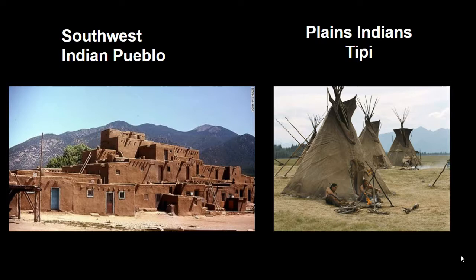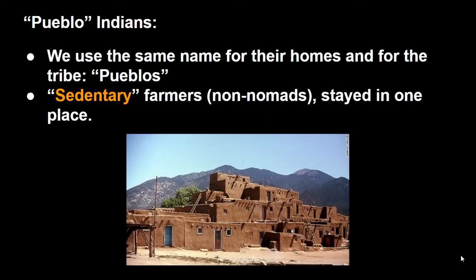For the Plains Indians, they were nomads, always searching for food because they relied on a food source that moves — the buffalo — so their homes also had to move. But the Southwest Indian Pueblos were what we call sedentary farmers. Sedentary means non-nomadic; they stayed in one place. Despite the dry conditions, they adapted to their environment by becoming farmers, and if you're a farmer, you have to stay in one place to tend, water, weed, and harvest your crops. The difference in their homes is 100% connected to how they adapted to the environment.